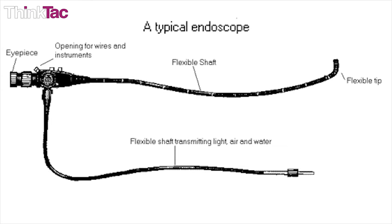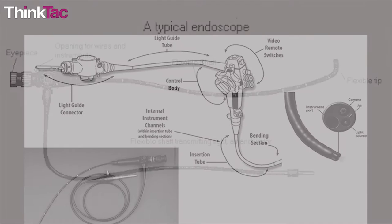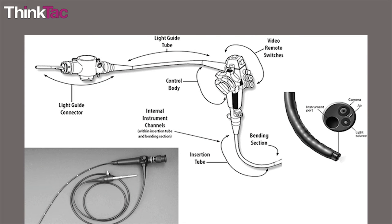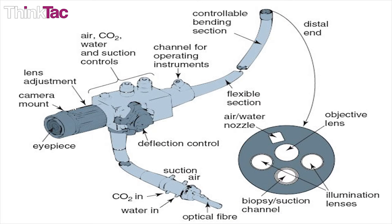The first fiber provides the light from an external source to illuminate the body cavity and through the second the image is relayed back to the eye of the observer.